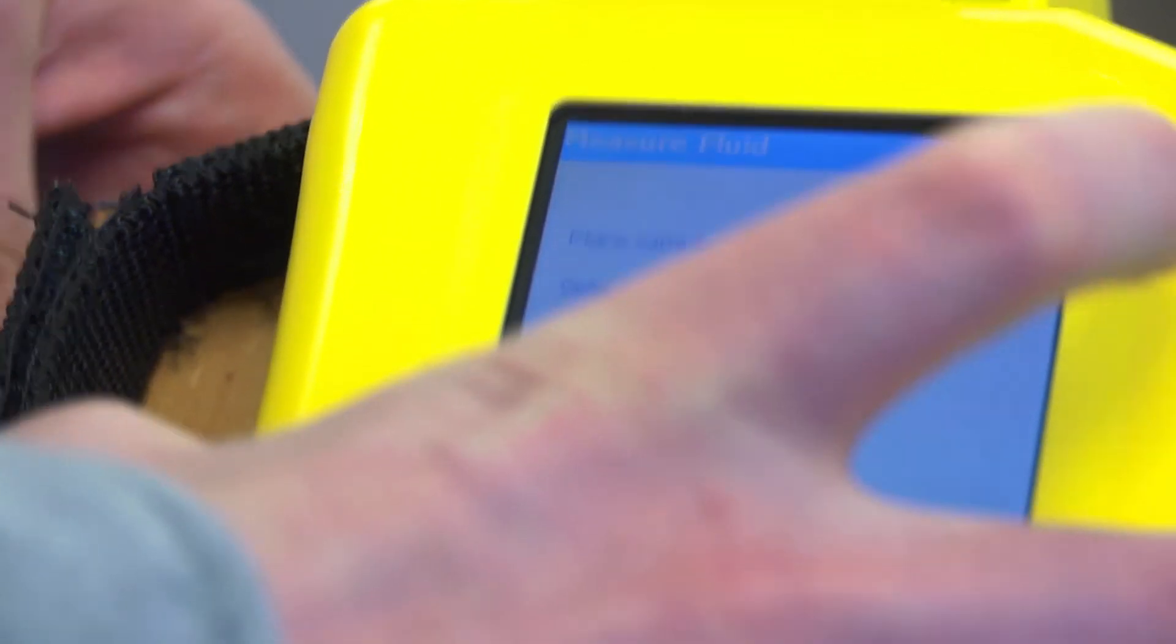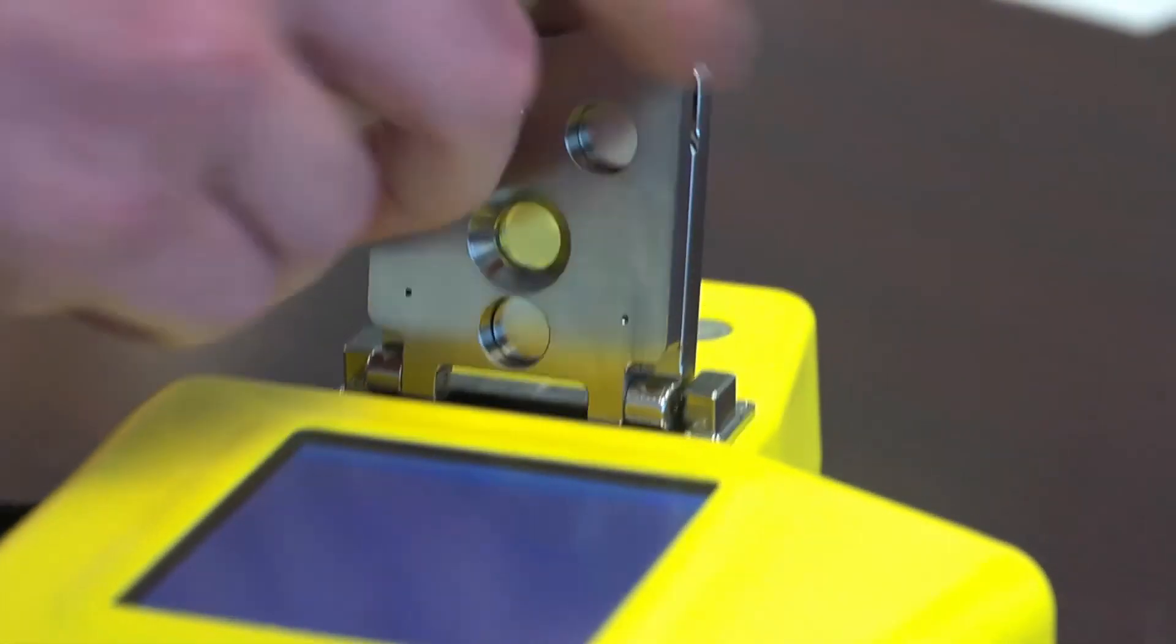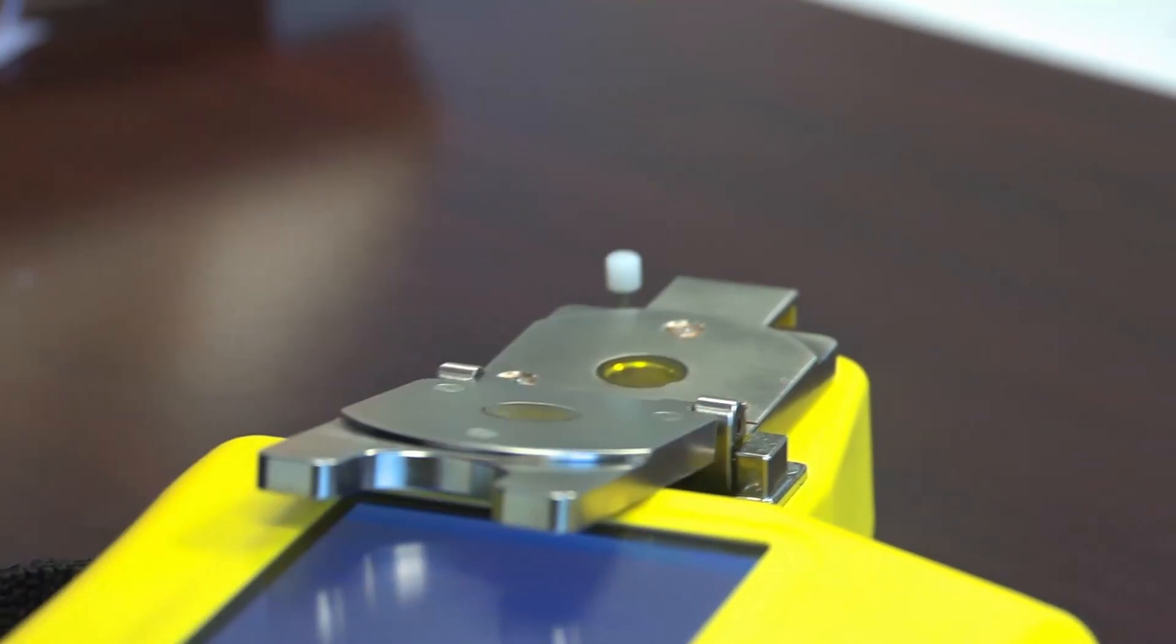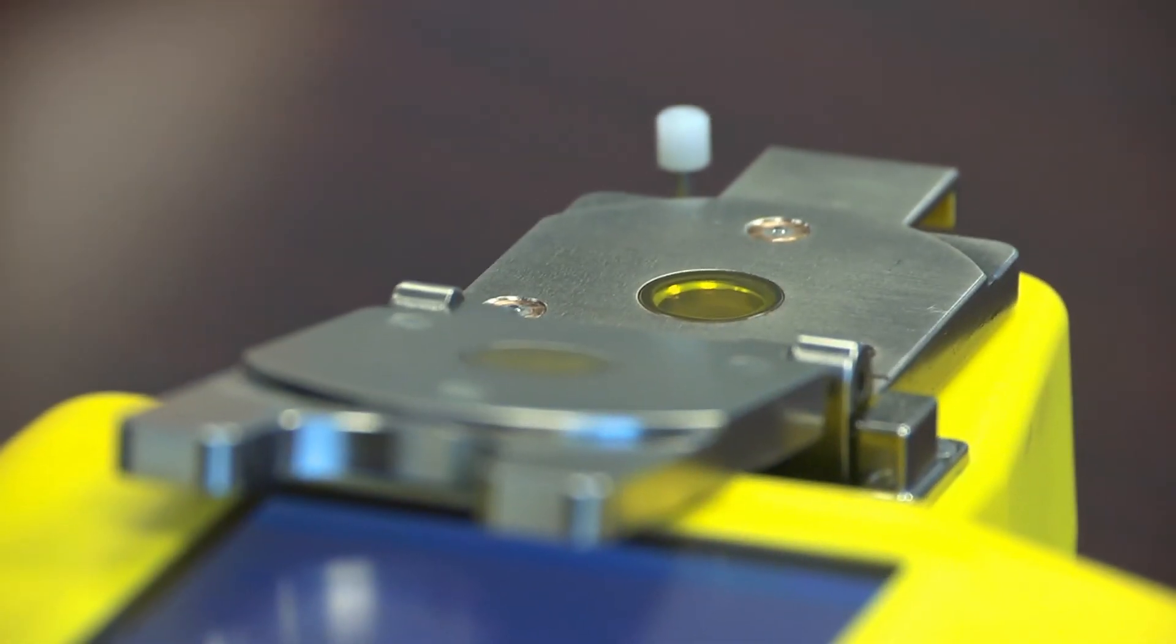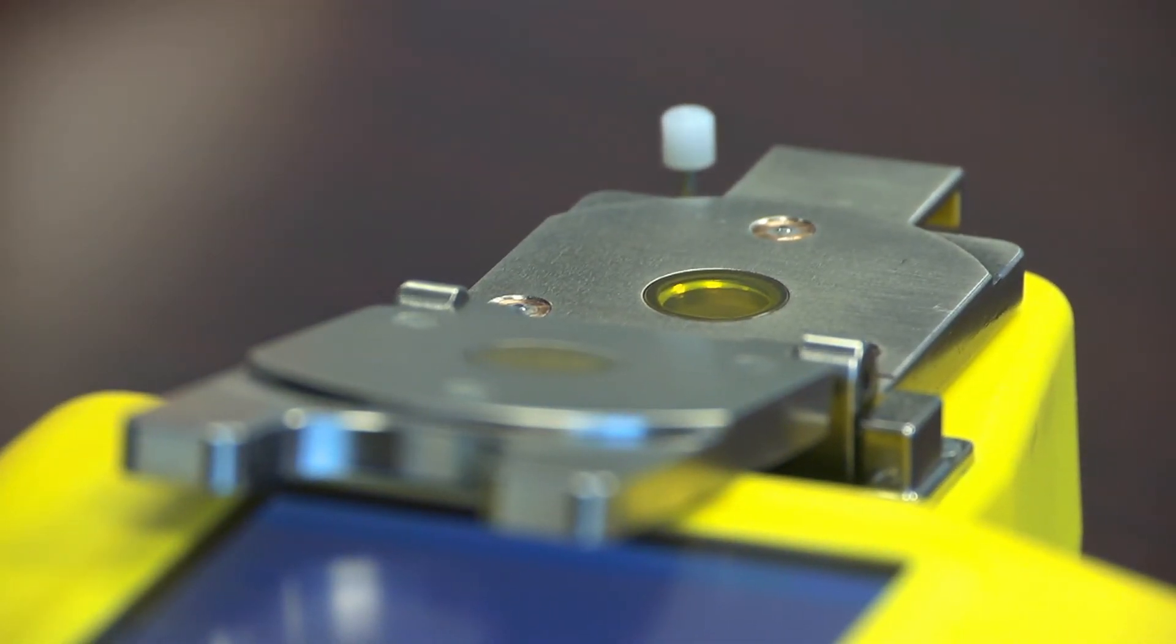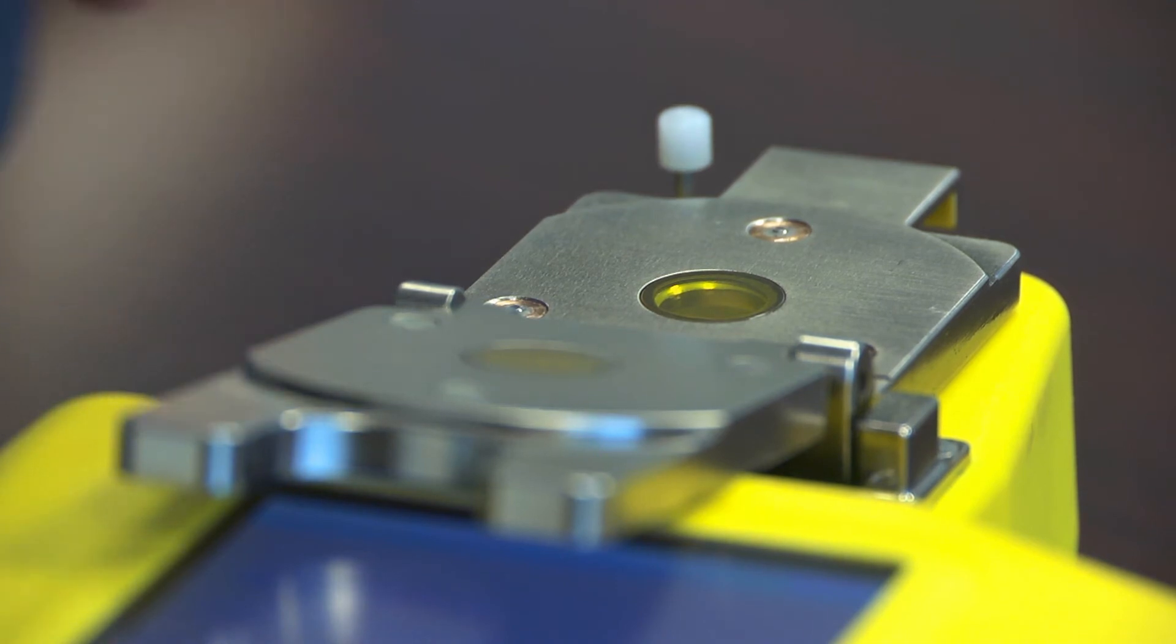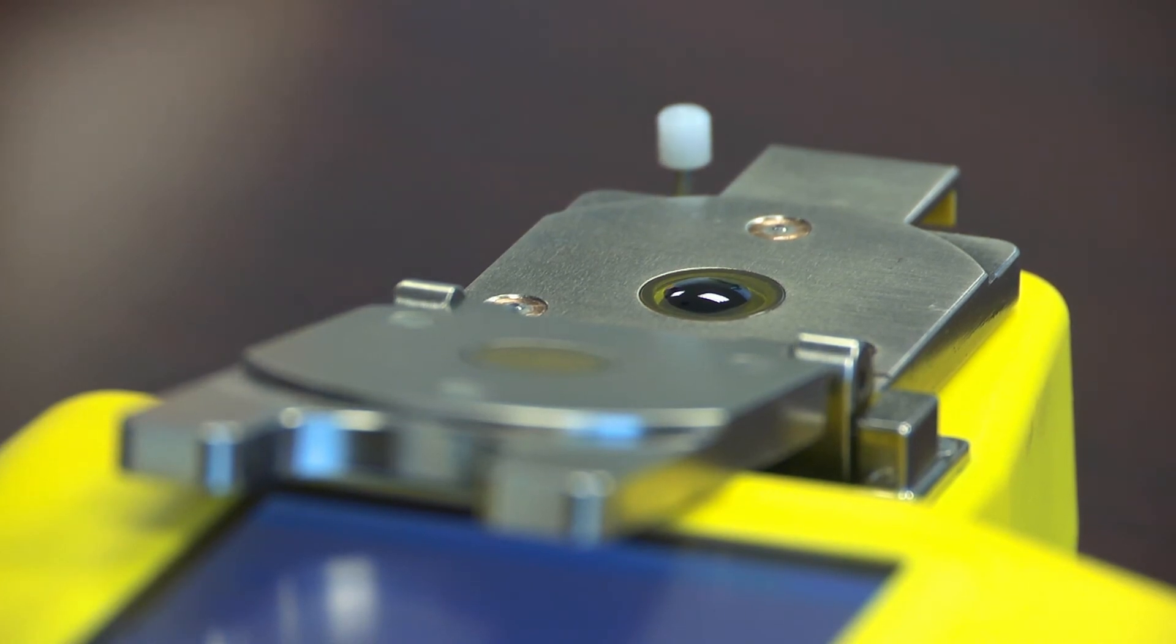Then it will ask you to place a sample on the cell. We open up the flip top cell and put in a small drop. A pipette is not necessarily necessary. You can use a dip stick or anything else. Just enough to cover it when you close.